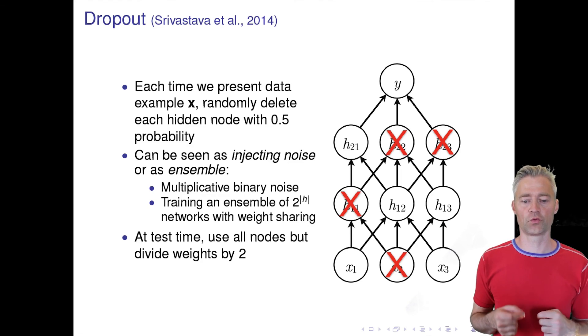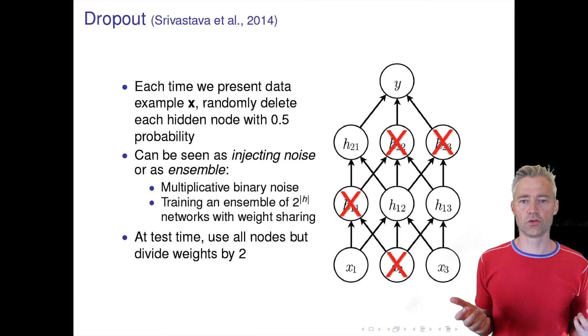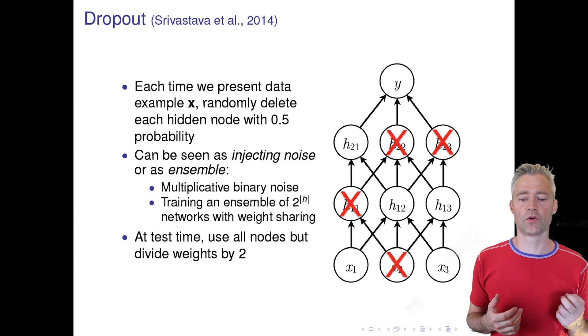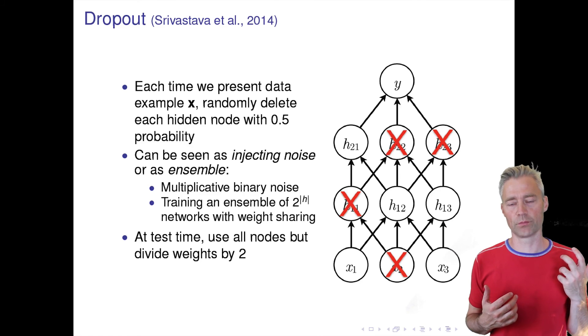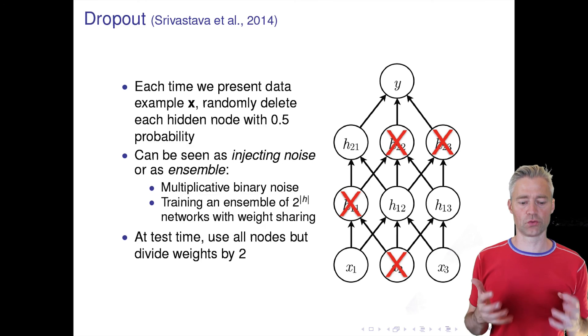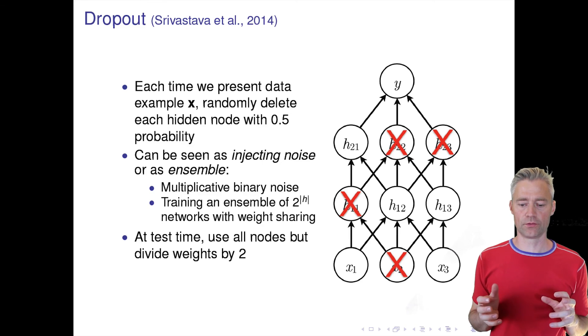The only hyperparameter we have when we perform dropout is that we have to decide how many of the hidden units we remove. In this example we've chosen to remove half of the hidden units. This is usually a quite good number—we see that we get good performance usually by removing between 20% and 50% of the units. Why does this actually help? I'll show that in the next slide.